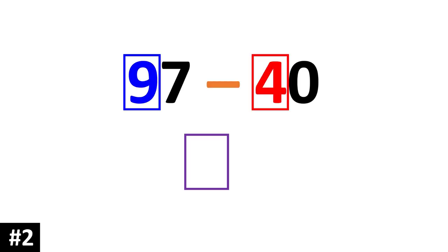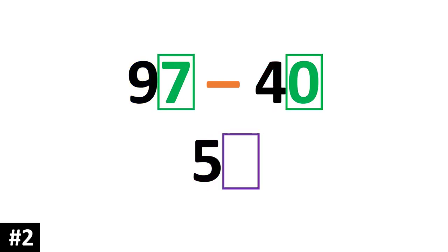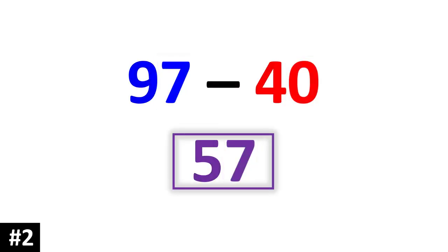Let's take a look at our next example: 97 minus 40. To subtract by 10s, first we ignore the ones column and just focus on the 10s. 9 10s minus 4 10s gives us 5 10s. We look to the ones: 7 minus 0 is 7. So our answer is 57.